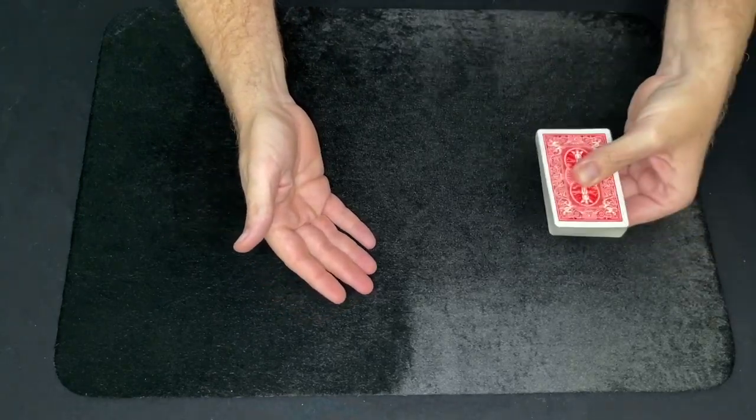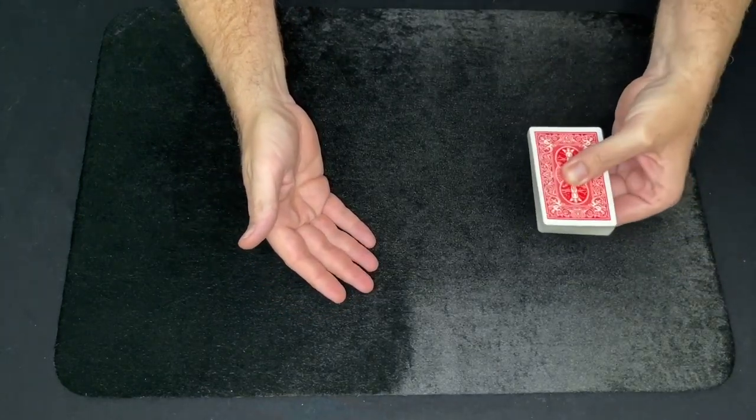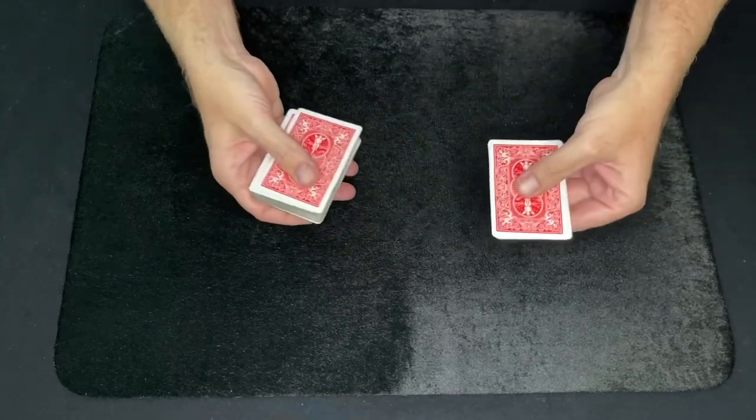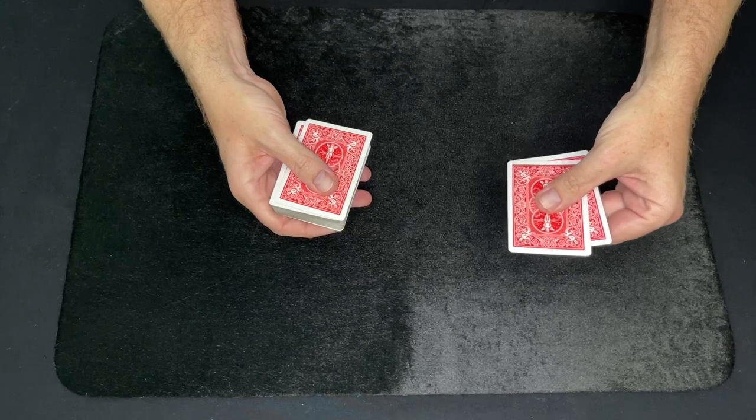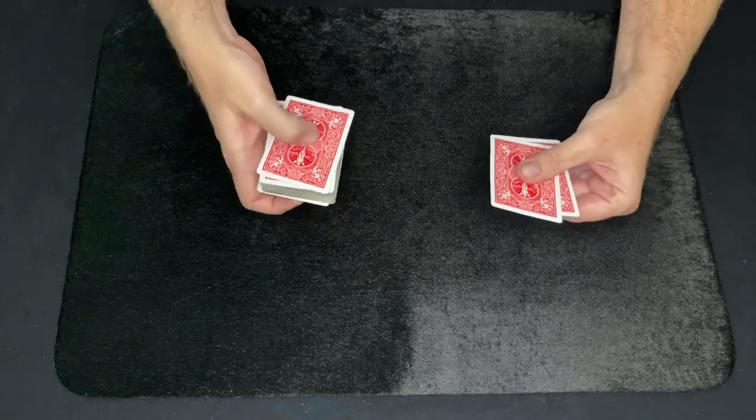You just hold the deck with a grip. This is my left hand. And when you toss it, one bottom card and one top card from the deck stays in this hand.